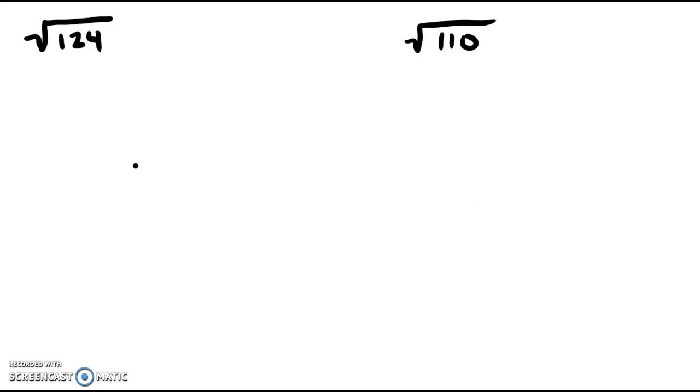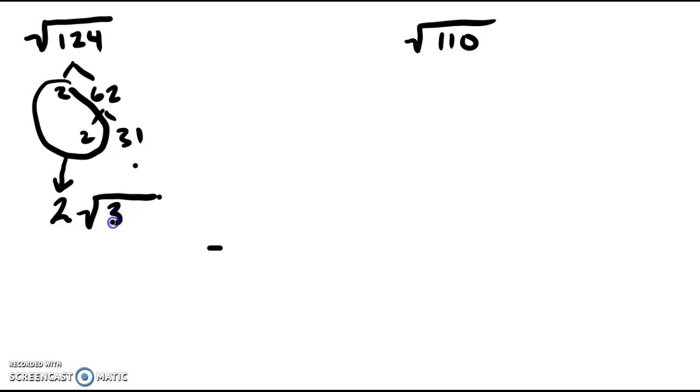If you have numbers that are a little bit bigger or more confusing, you can use what we call the factor tree method. For the factor tree method, we're just going to break it down to prime numbers. With evens, always take out a 2. So, 62, 2, 31 is prime. What you do is you take 2 of the same number and make it 1 of that number and move it to the outside. We've got two 2's, we're going to move it to the outside and make it 1 2. The 31 we have to keep inside the radical.